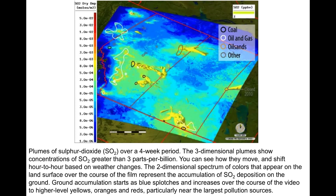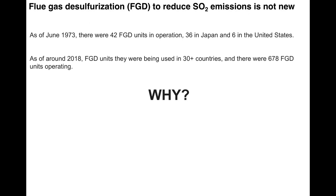Looking back through history: by 1973, there were 42 flue gas desulfurization units in operation—36 in Japan and 6 in the US. By 2018, the numbers had grown substantially. The exact numbers don't need to be memorized, but the trend reflects the widespread adoption of emission control technology driven by legislation and growing awareness of the environmental and health impacts of sulfur dioxide.